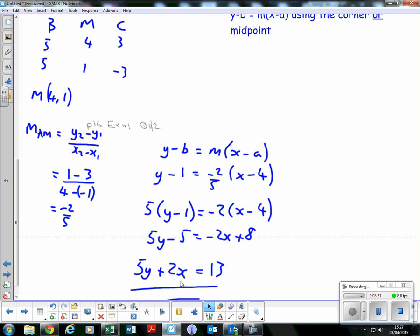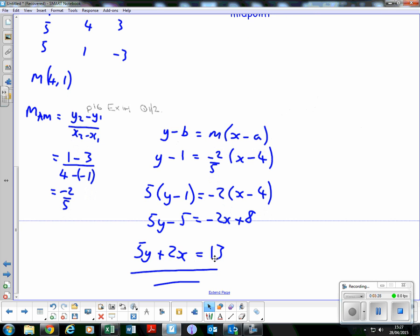Add 5 to both sides, and the 5 comes over and adds on to the 8. So 5y + 2x = 13.